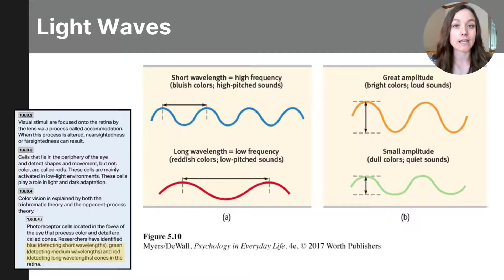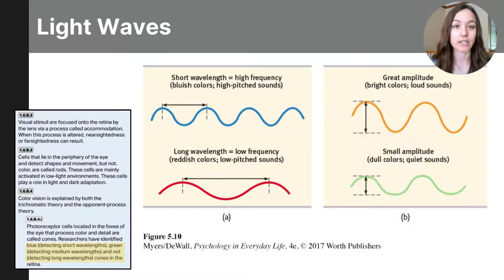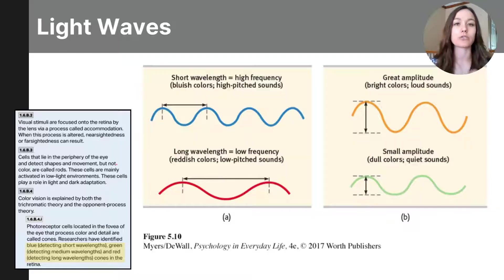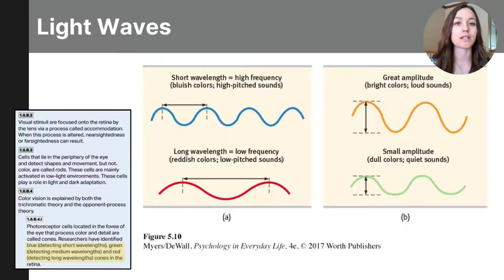Let's start with light. Light is a type of energy that travels in waves. Our eyes are fantastic organs that detect light, though we can only detect a small range called visible light. Wavelengths refer to the distances between the peaks of light waves — these distances can be short or long, and this influences color. Visible light waves range from 400 to 700 nanometers. Short wavelengths are interpreted as blue, long wavelengths as red, and medium wavelengths as green.